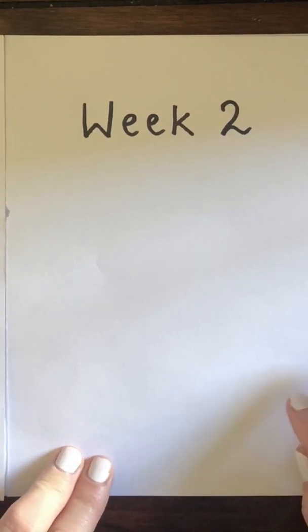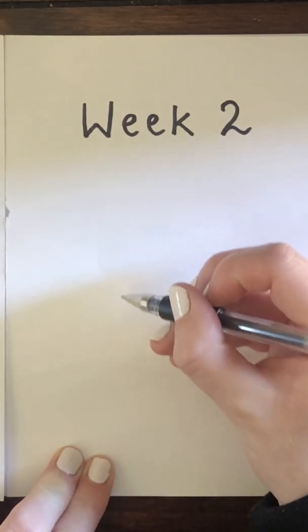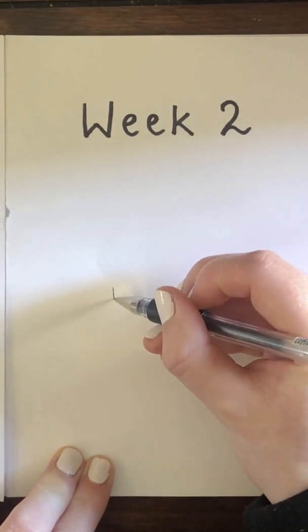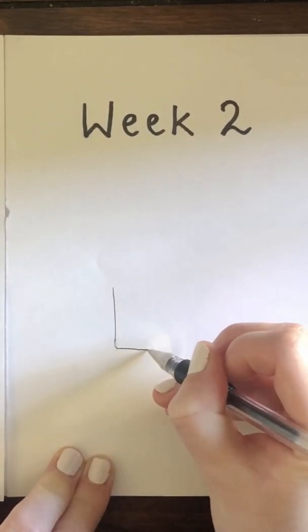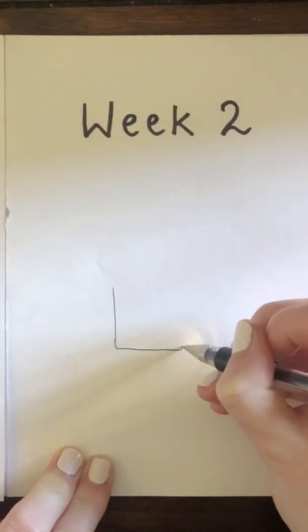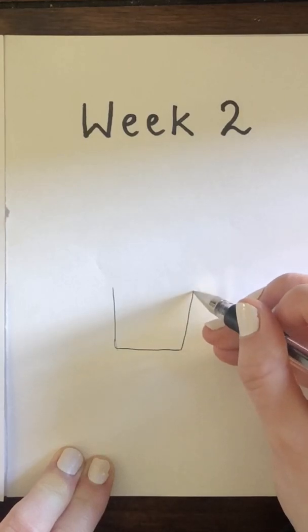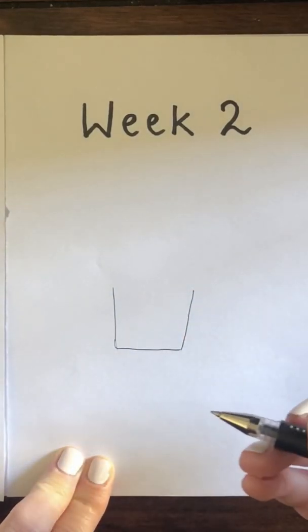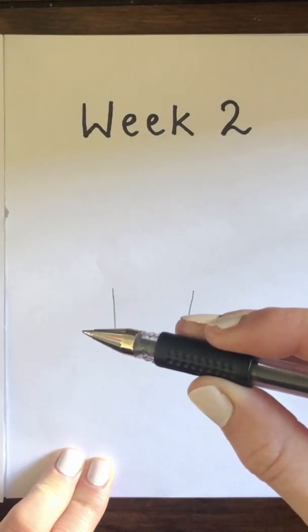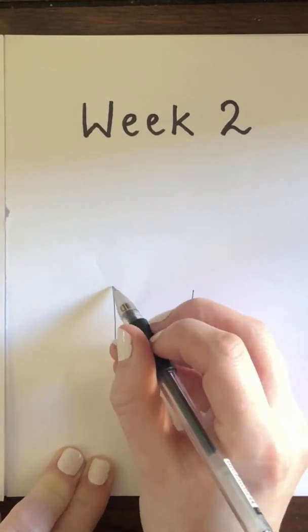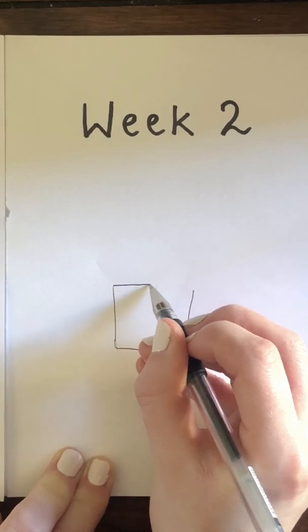So first I'm going to draw the pot because my plant is in a pot. Very carefully. Remember what do we use when we're using our pen or pencil? We use our pinchy fingers. So make sure you've got your pinchy fingers like Miss Wright. So there's my pot.